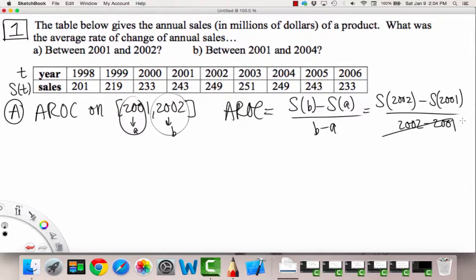So the bottom is just going to be a 1, so we don't have to worry about that. So we just have that our average rate of change on this interval is equal to S of 2002. We're just going to look at the table for that value. So 2002 is here, and the corresponding value of our function, our sales, is 249. So we have 249 minus, and S of 2001 is given by 243. 243, and this is all over 1, so this is going to be equal to 6.